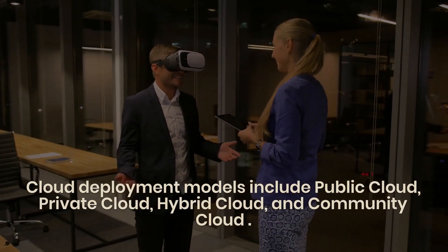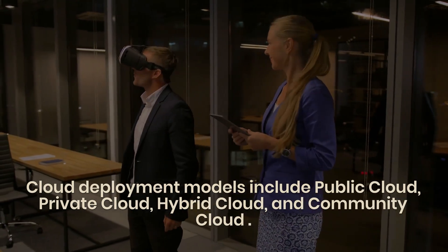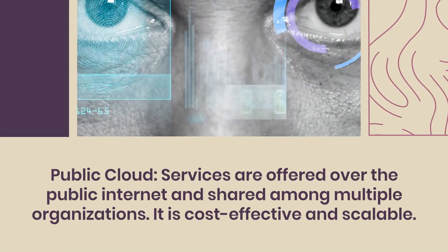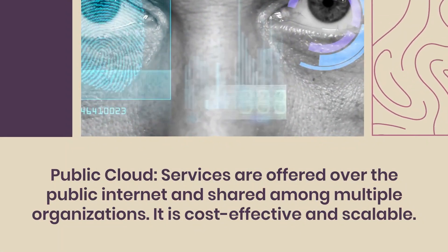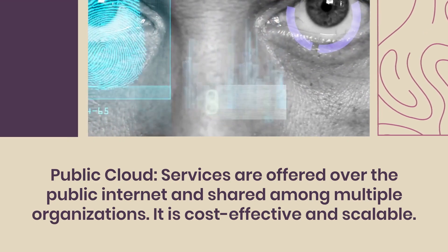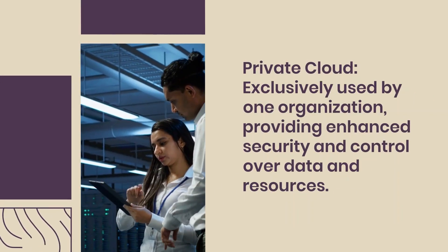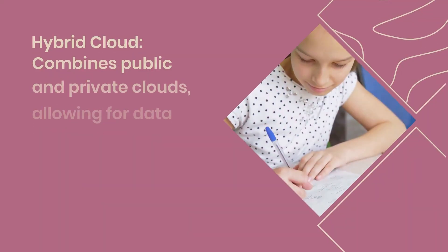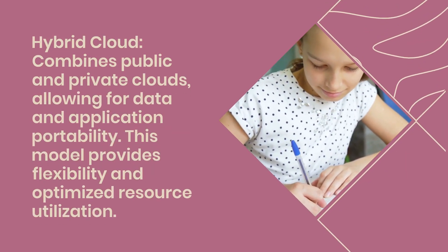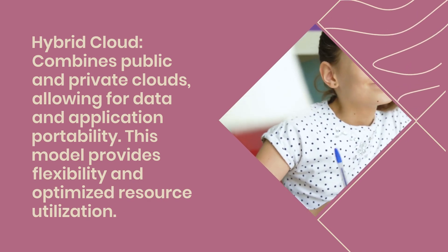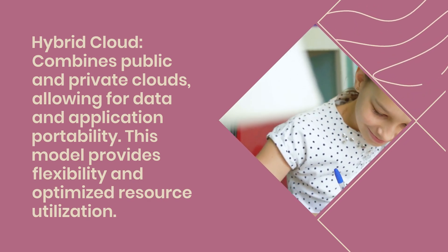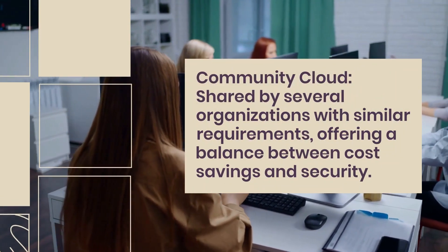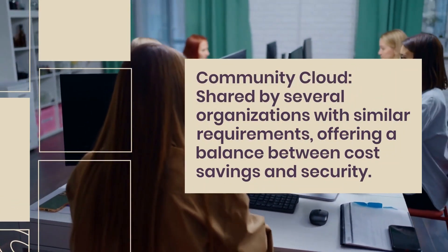3. What are the main types of cloud deployment models? Cloud deployment models include public cloud, private cloud, hybrid cloud, and community cloud. Public cloud services are offered over the public internet and shared among multiple organizations — it is cost-effective and scalable. Private cloud is exclusively used by one organization, providing enhanced security and control over data and resources. Hybrid cloud combines public and private clouds, allowing for data and application portability, providing flexibility and optimized resource utilization. Community cloud is shared by several organizations with similar requirements, offering a balance between cost savings and security.